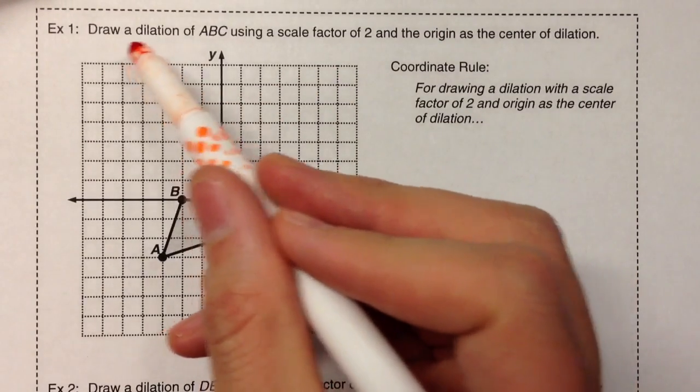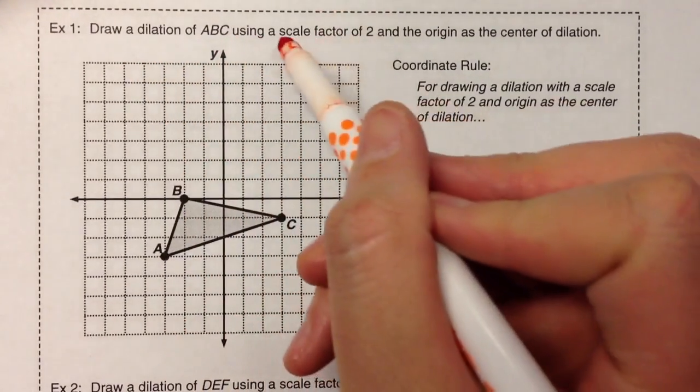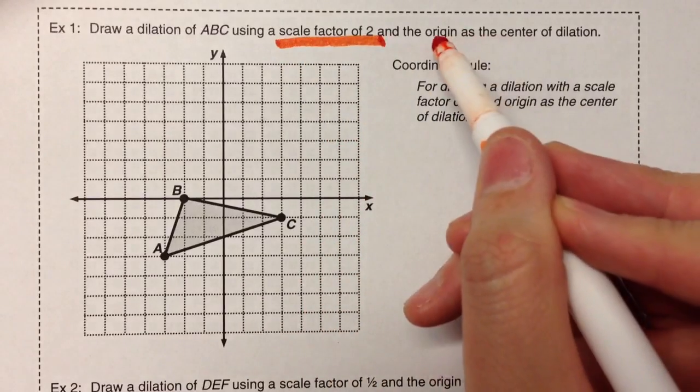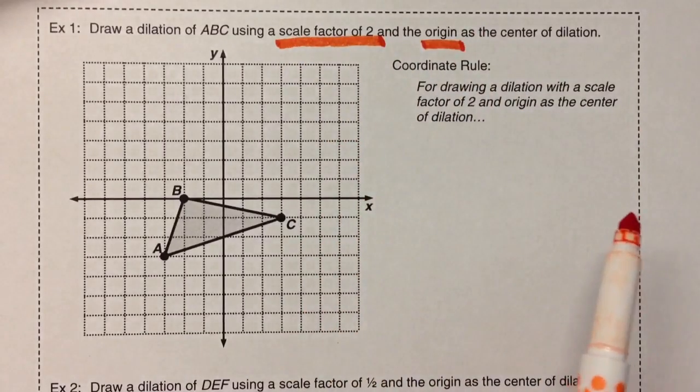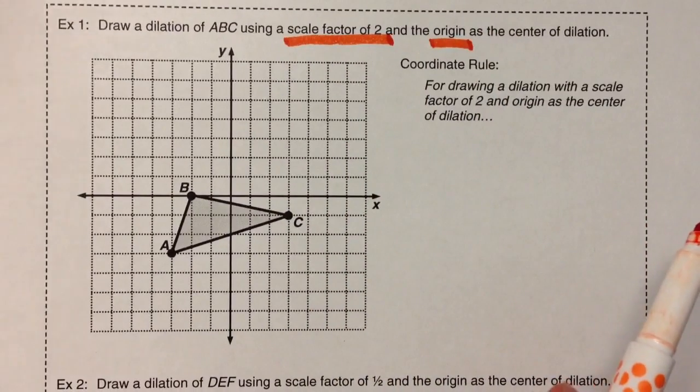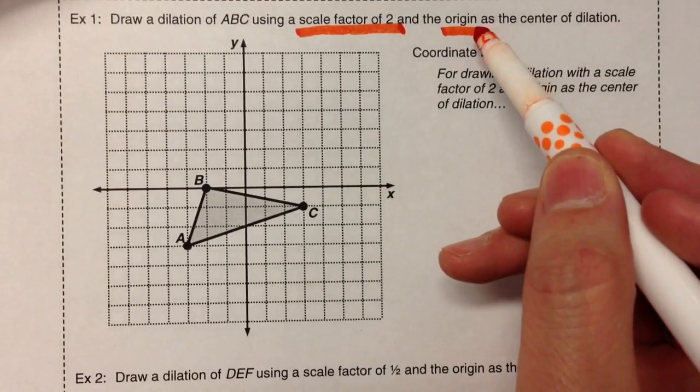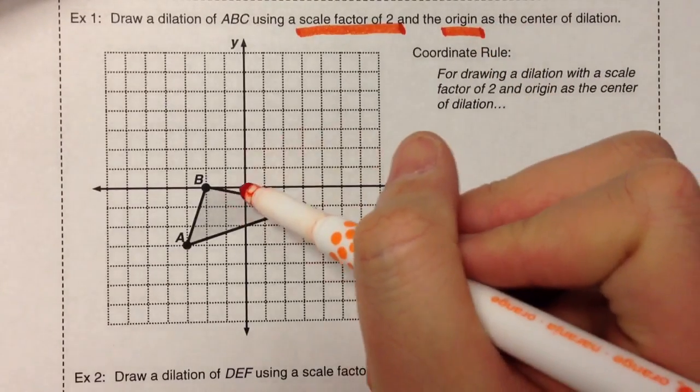So for example, draw a dilation of ABC using a scale factor of 2 and the origin as the center of dilation. To do this, start with your center of dilation, in this case the origin, so that's right here.